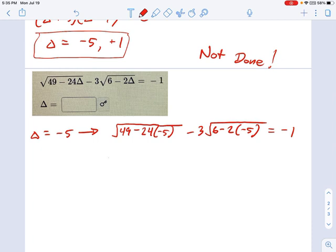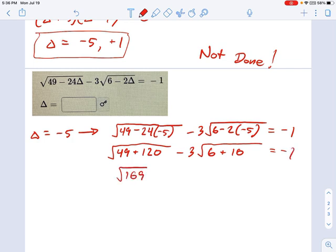So, well, this is 49. See, 24 times 5 is 120. And they're both negative, so that's plus 120. And this is minus 3 times the square root of, well, negative 2 times negative 5 is positive 10. Okay, so this becomes the square root of 169 minus 3 times the square root of 16 equals negative 1.